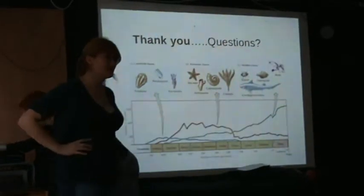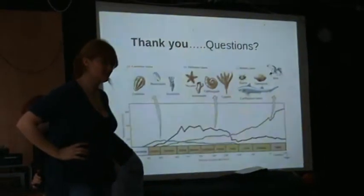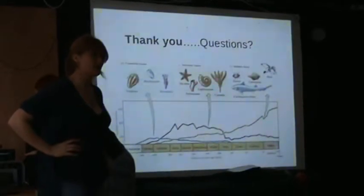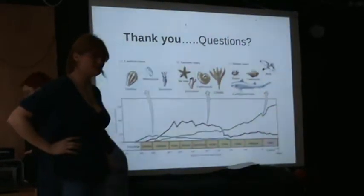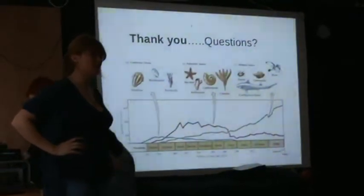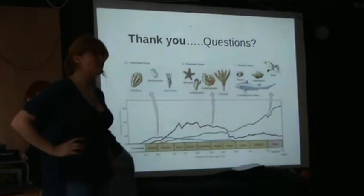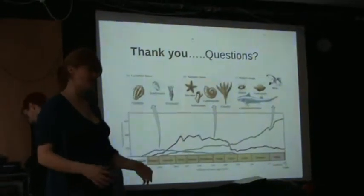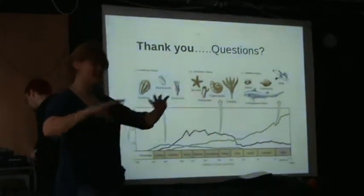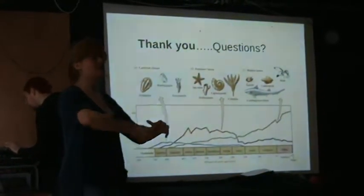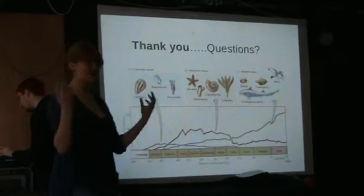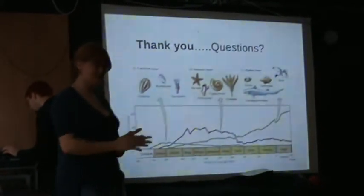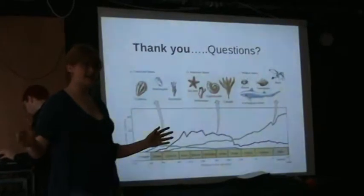Were all the mass extinctions associated with meteorites crashing into Earth, or were some not related to that? The mass extinctions are all associated with meteorites crashing into Earth. But there are other extinctions caused by, for example, the supercontinent colliding and generating volcanic reactions — these would have caused many species going extinct, but not to the grand scale of a mass extinction.